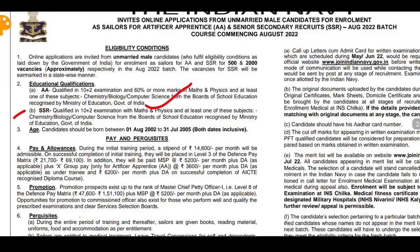This is the age limit. There are two things to note. The cutoff is 1st August 2020, during the last month. This is the end of August, and this is the last date of August 5th. We need to apply accordingly; the eligibility may vary.